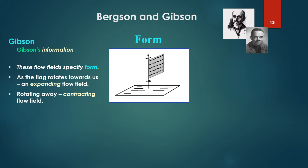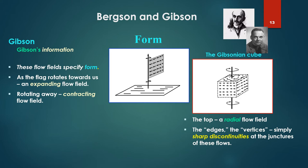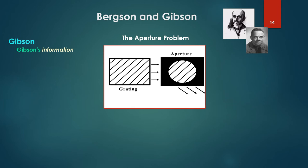This is where Gibson most critically fits into the Bergsonian framework. It's this structure, dynamic over time, that's driving the internal processes of the brain as a reconstructive wave, or resonated in Gibson's terms. Now these flow fields also are critical in specifying form. Note, as that stiff flag would rotate, as it rotates towards us we'd have an expanding flow field. As it rotates away, a contracting flow field. If we were to take this more generally as a cube rotating, we'll call it the Gibsonian cube. Well, the top would be a radial flow field. The edges, the vertices, those corners would simply be sharp discontinuities at the junctures of these flows.